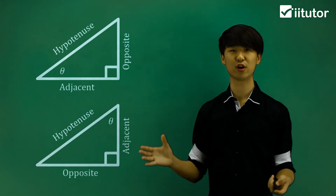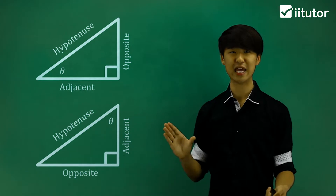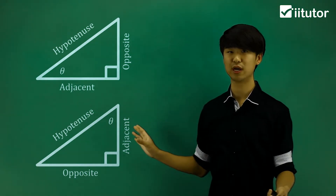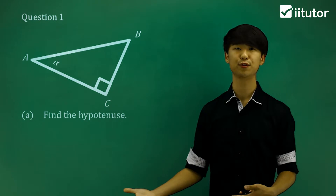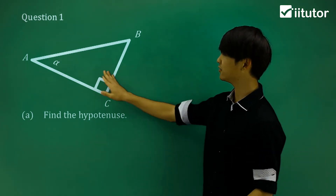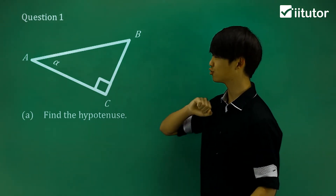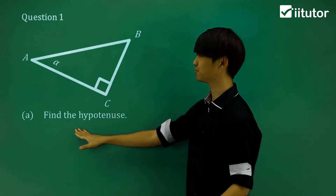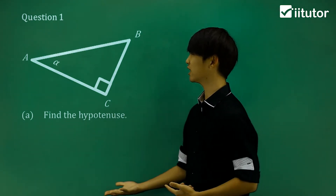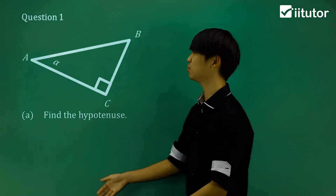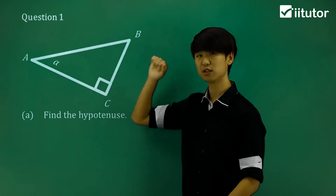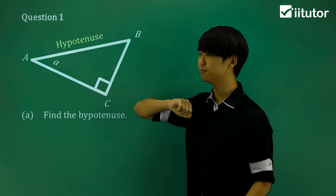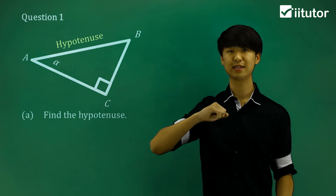So we're going to focus on labeling these different sides of this triangle. In question one, we're given a right-angled triangle and in part A it asks us to find the hypotenuse. Finding the hypotenuse is the easiest part — it's just the longest side, and it's also opposite to the right angle.